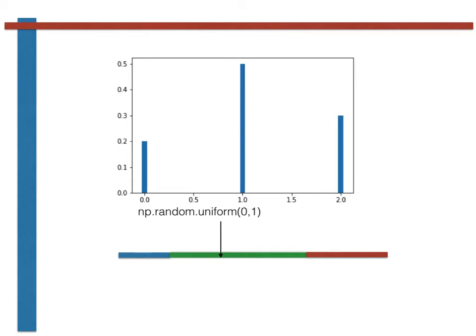Lastly, if the uniform random variable is in the red segment of the line, we set the multinomial random variable equal to 2.